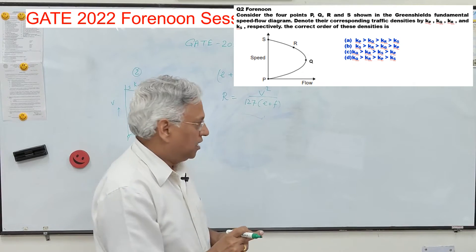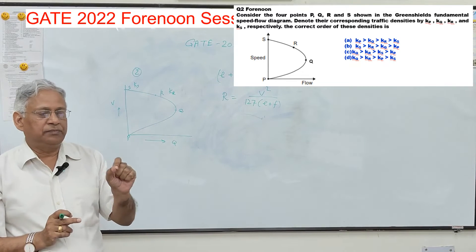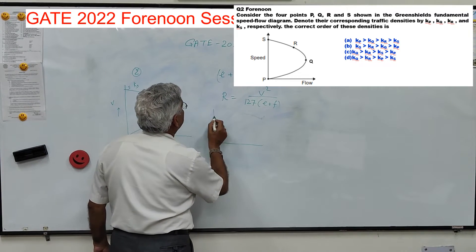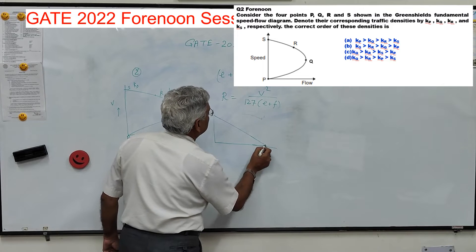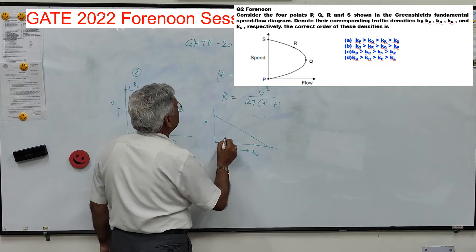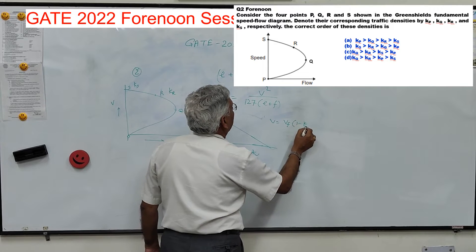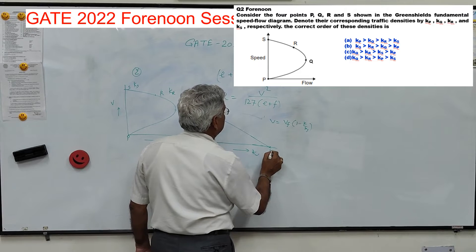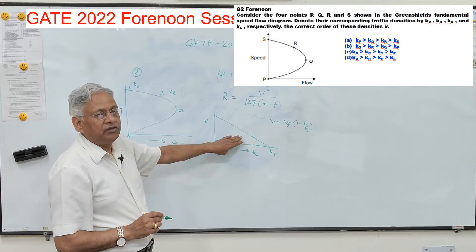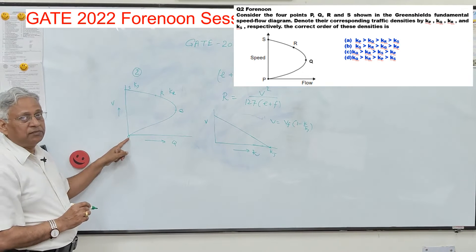The question refers to the Greenshield fundamental speed-flow diagram. Recall that the Greenshield fundamental relationship between density and speed is a linear one: V equals Vf times (1 minus K upon Kj), where Kj is the jam density — the maximum density. When this speed-density curve is converted into a speed-flow diagram, it produces a parabolic curve.